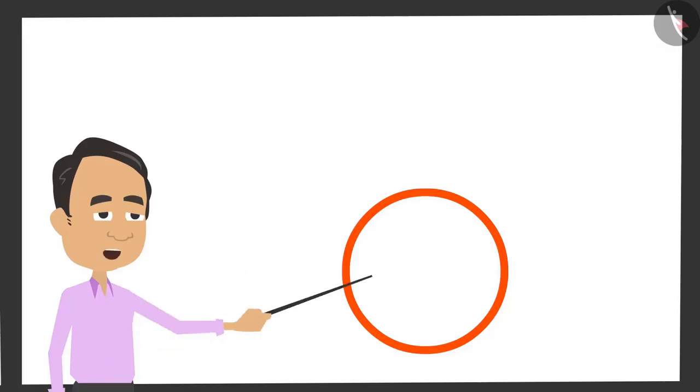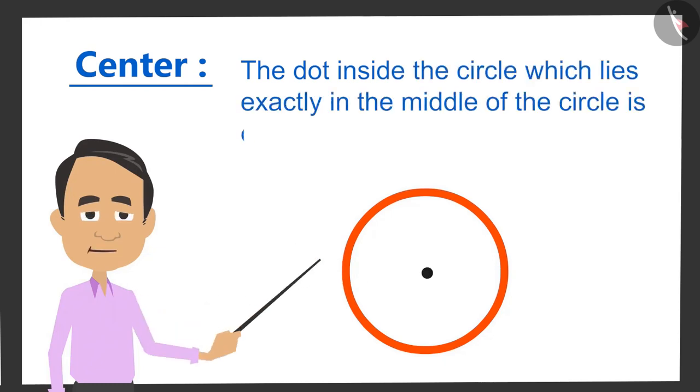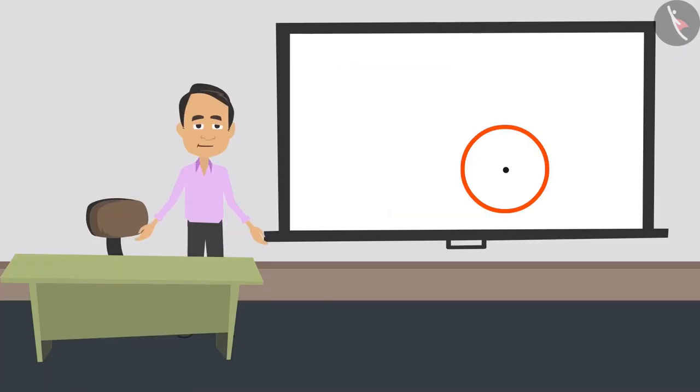The first property of a circle is the center. The dot inside the circle, which lies exactly in the middle of the circle, is called the center of the circle. And all the circles have only one center.